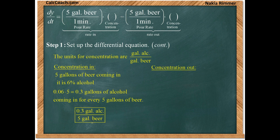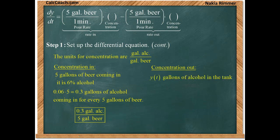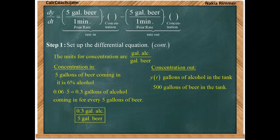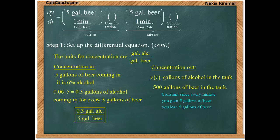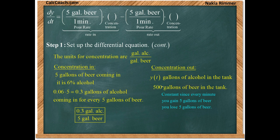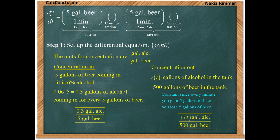How about the concentration going out? Well, in the tank, how much alcohol is there? That's going to be represented by the function y. In the tank, how many gallons are there? It's 500 gallons of beer. So we divide these, gallons of alcohol by gallons of beer, and that'll be the concentration. The good thing about this problem is that the 500 gallons is constant. We are gaining five gallons of beer, we're losing five gallons of beer, so we'll always have 500 gallons of beer in the tank.